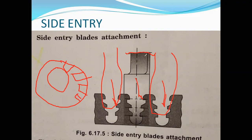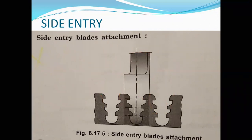The advantages of the side entry attachment are: bending across section 1-1 is eliminated; replacement of blades is simple; a complete ring of blades is possible by making the wheel width greater than the blade width; and the maximum stress in the fastening can be reduced. One disadvantage is that it is an expensive attachment due to the heavy rim.